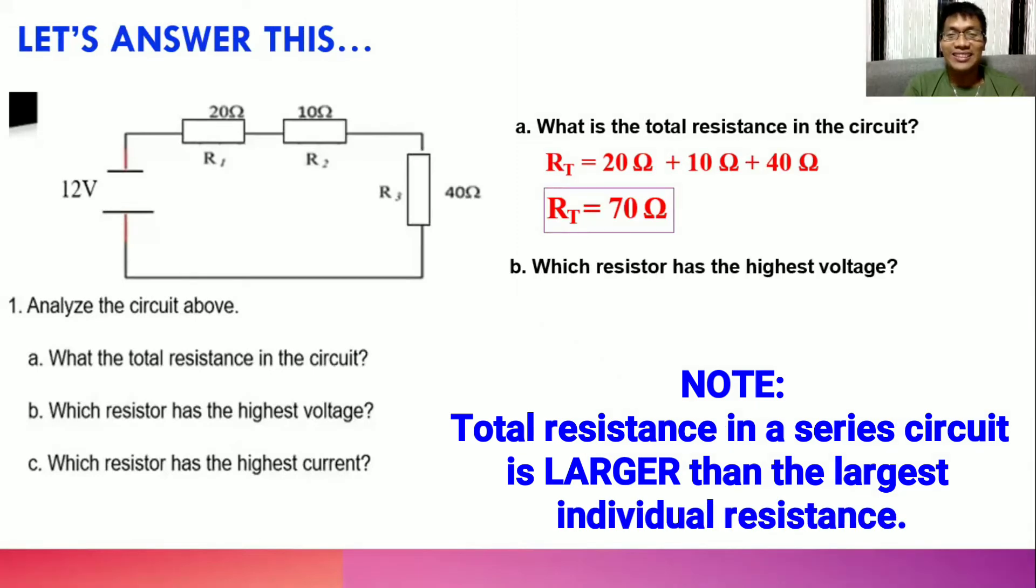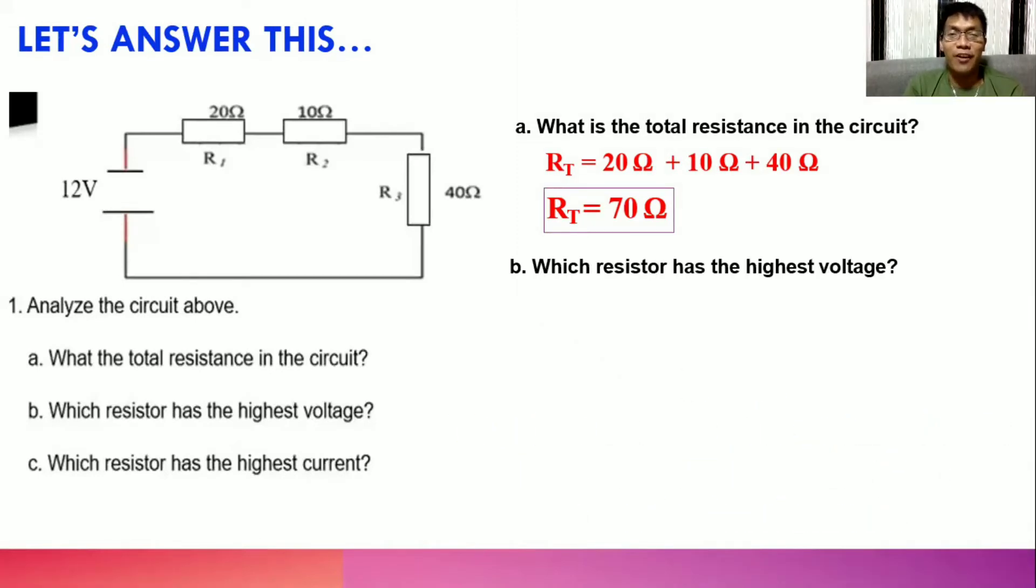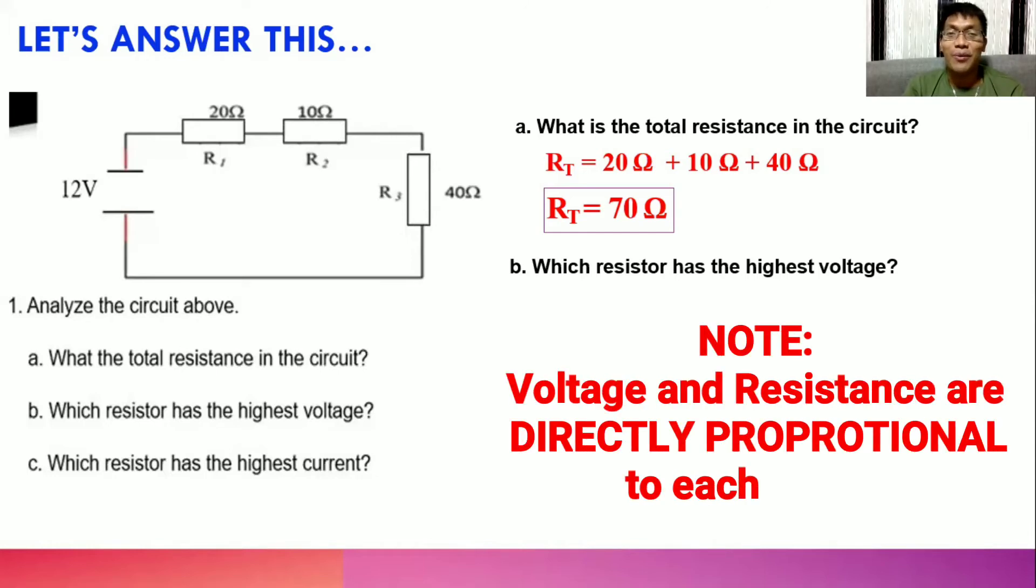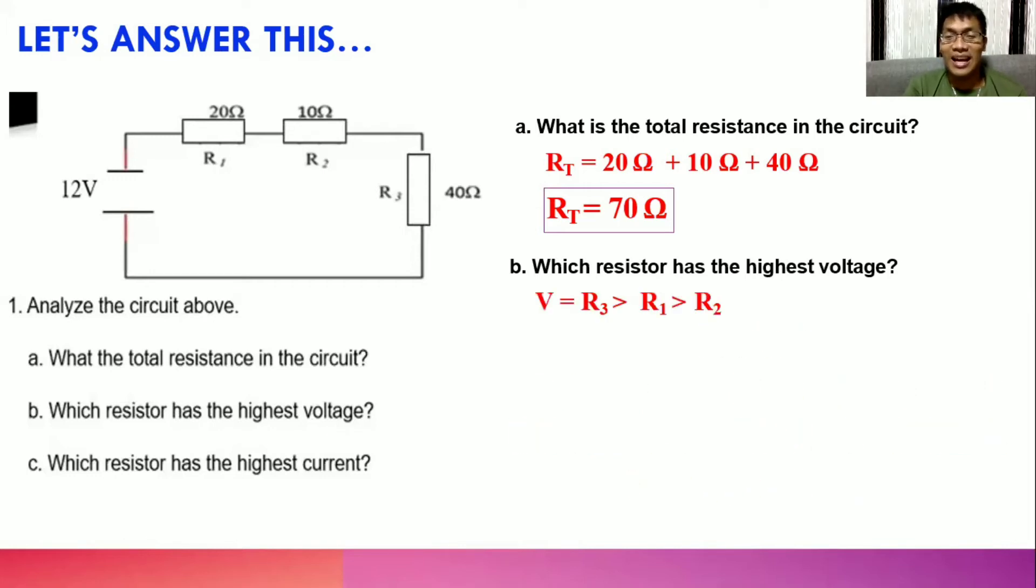Letter B, which resistor has the highest voltage? In our previous vlog, we have learned that resistance is directly proportional to voltage. So with that, R3 has greater voltage than R1, while R1 has greater voltage than R2. The correct answer is resistor 3, which has 40 ohms of resistance. Since it has the highest resistance, this also has the highest voltage.